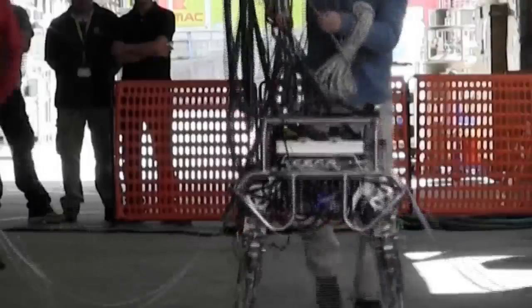So this particular robot is called HIQ. It stands for hydraulic quadruped. The idea is to be able to create a robot which has got the ability to move around like a goat or a sheep or a dog.